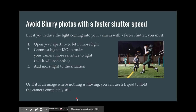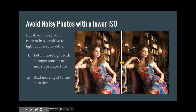If nothing in your scene is moving, use a tripod to hold the camera completely still. Then you can use a really long shutter speed to let in tons of light, and it doesn't matter because you're not dealing with motion — so you won't have blurred or frozen motion issues.